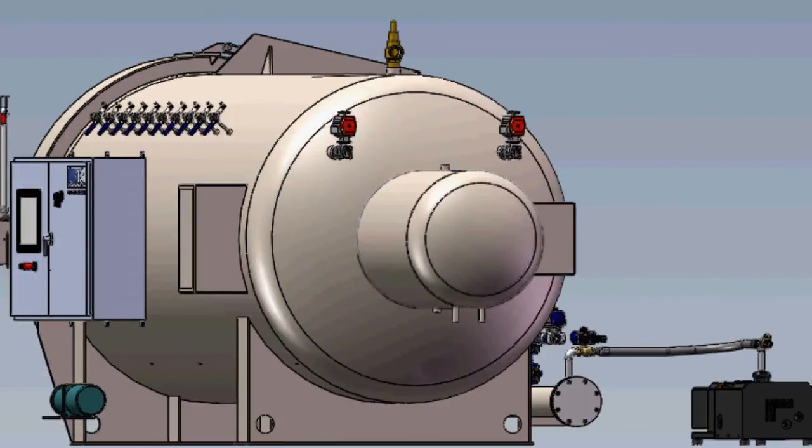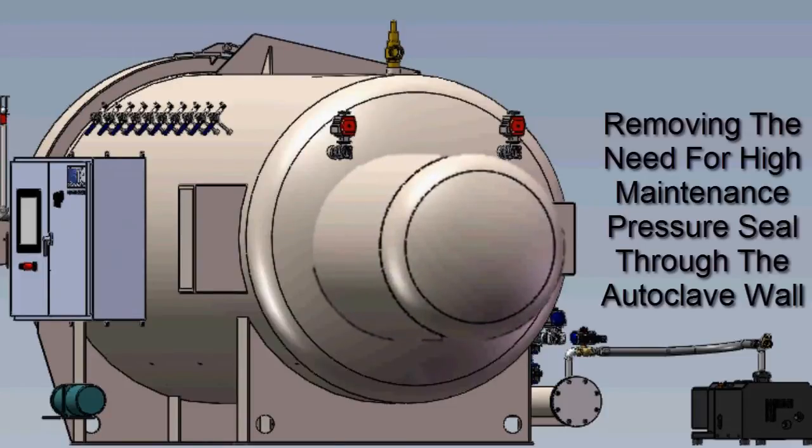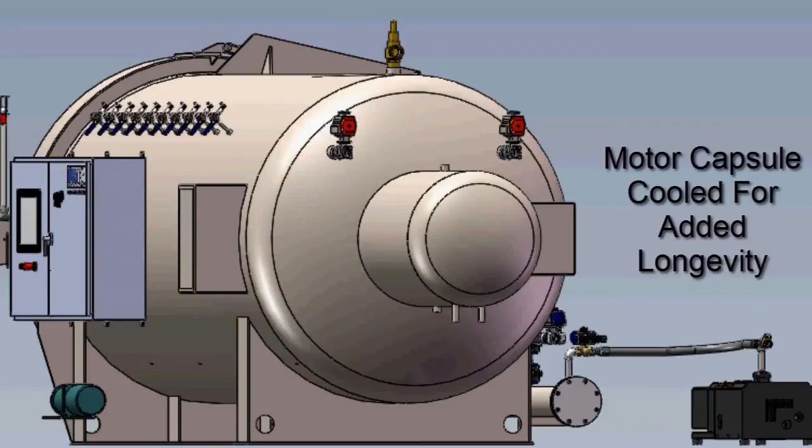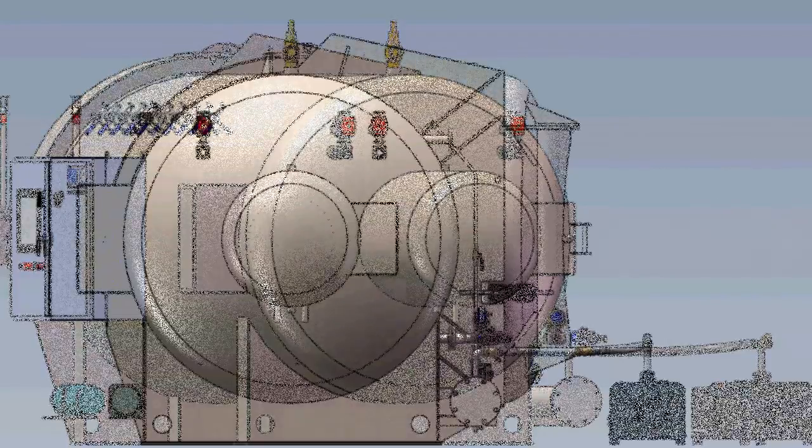The main fan drive motor is enclosed within a pressurized motor capsule. The pressurization of the motor capsule removes the need to have a high-maintenance pressure seal through the wall of the autoclave, thus increasing reliability. The motor capsule is cooled to maintain an acceptable atmosphere for motor longevity and has a removable access cover for ease of maintenance.